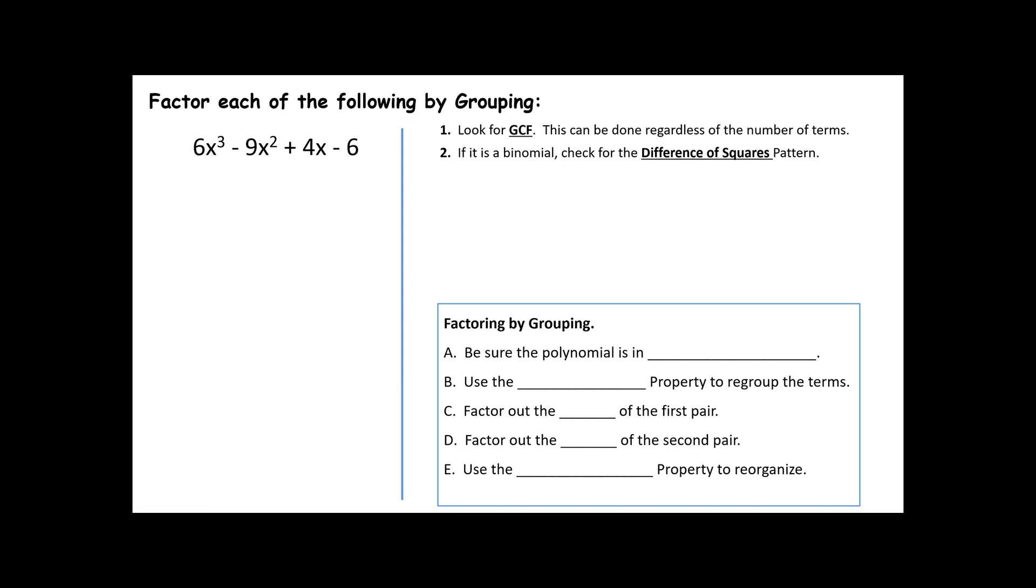The reason for that is because pulling out the GCF will first of all make some problems much easier to factor. And other problems, it will be impossible for us to factor with the methods we've learned if the GCF is still in place. When I look at each of these terms, 6, 9, and 6 all have common factors of 3, but 4 does not share that common factor. So this does not have a greatest common factor. The second thing we always want to do is check to see if it is a binomial. And if it is, we want to look for difference of squares patterns.